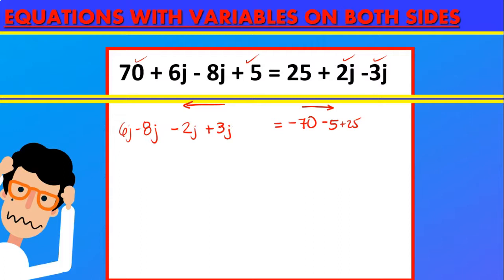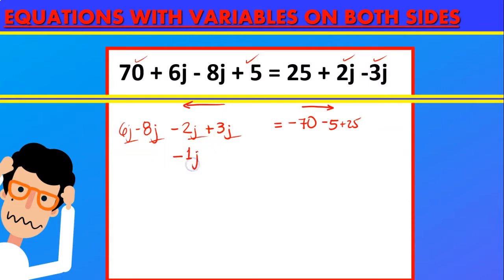Notice that whenever you move numbers or variables to the other side you have to change the sign — if it's adding it becomes subtracting, and whenever something is multiplying you have to divide, and vice versa. So in this case we have 6j minus 8j minus 2j plus 3j. They are all like terms because they all have the same variable. So 6 minus 8 is minus 2, minus 2 and minus 2 is minus 4, and minus 4 plus 3 is minus 1.